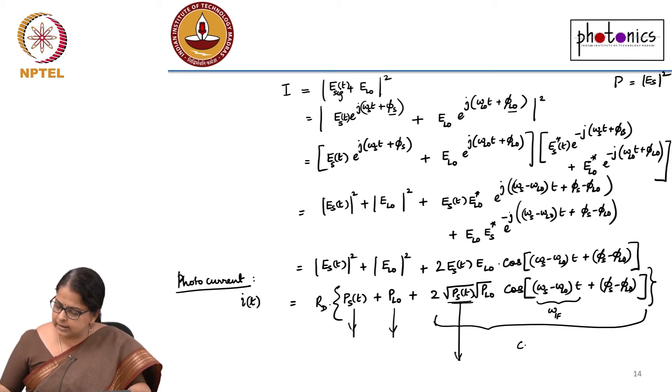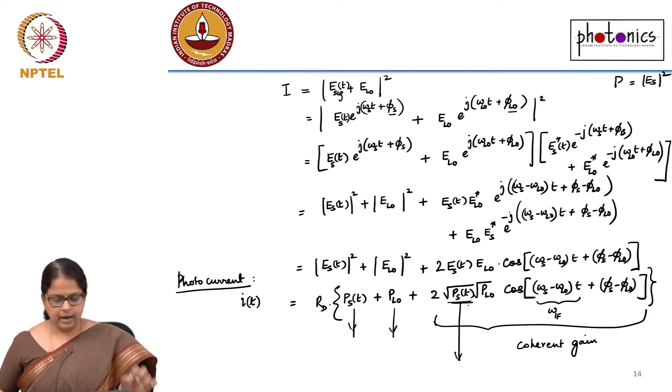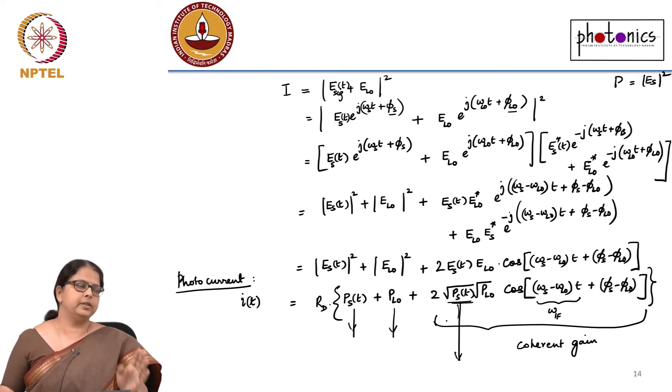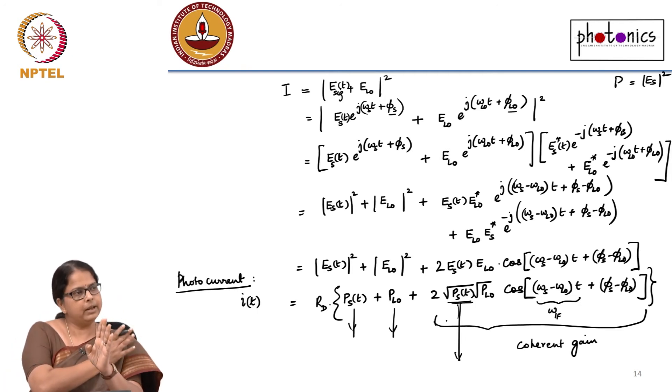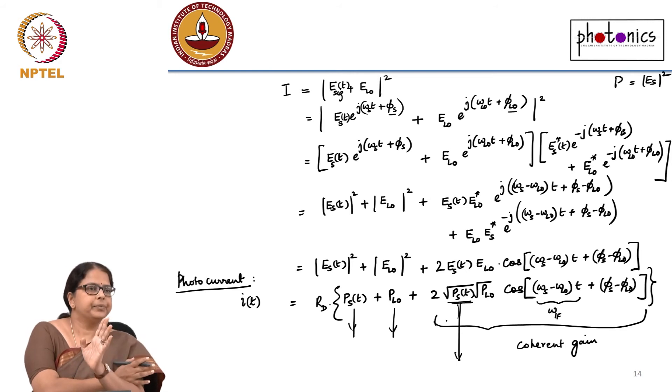I do have, this is the term which has what we say a coherent gain. This term tells you that at the receiver, I am going to get a frequency IF and my information is modulated on that frequency. That intermediate frequency is decided by the difference between your local oscillator frequency and your signal frequency. Signal would have been modulated at some frequency and then you have a look.